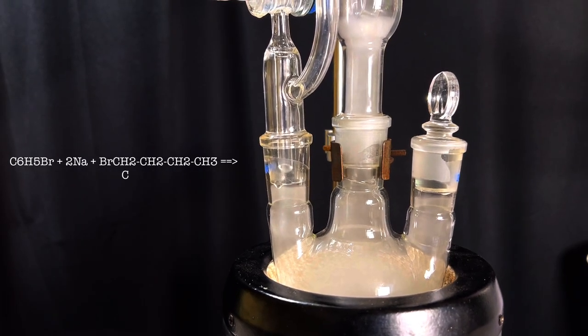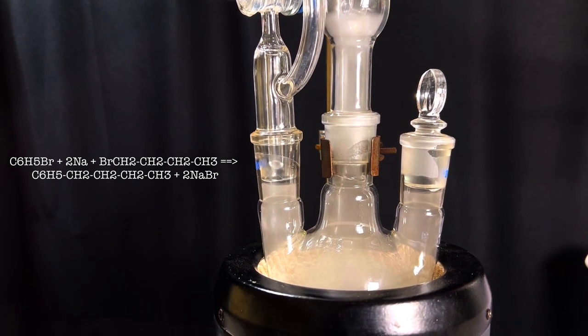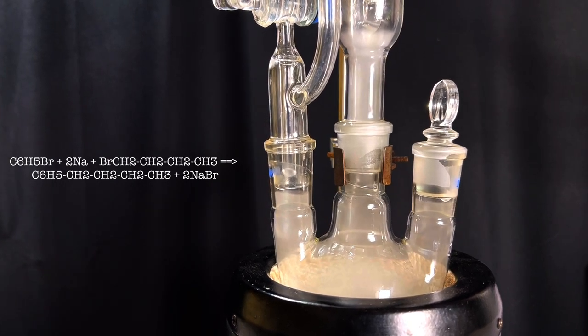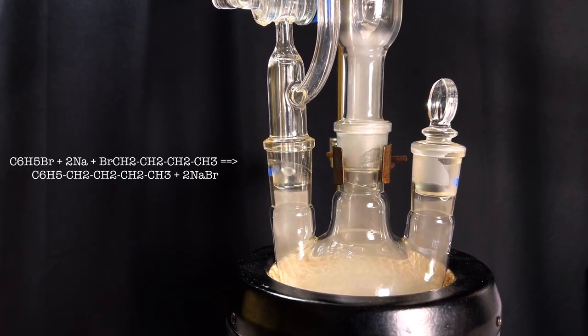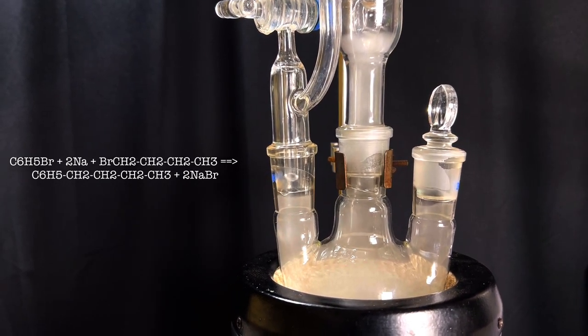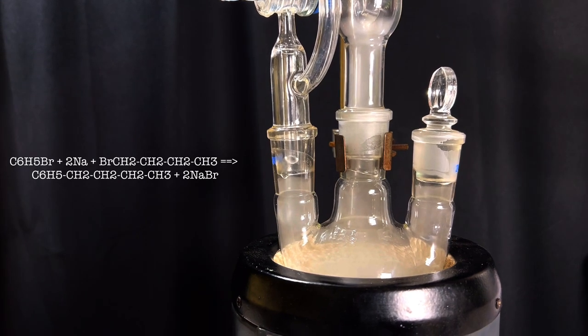The overall reaction that is happening here is like this: The bromide from the bromobenzene and bromobutane joins with two molecules of sodium to form sodium bromide and this gives rise to the condensed hydrocarbon butyl benzene. The byproducts formed like n-octane and biphenyl can be easily separated by distillation.